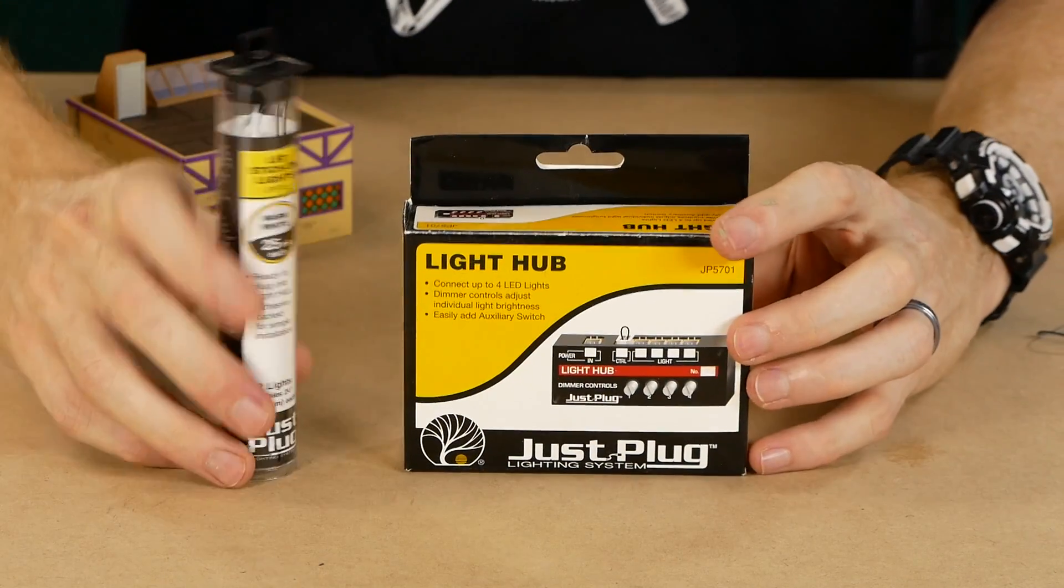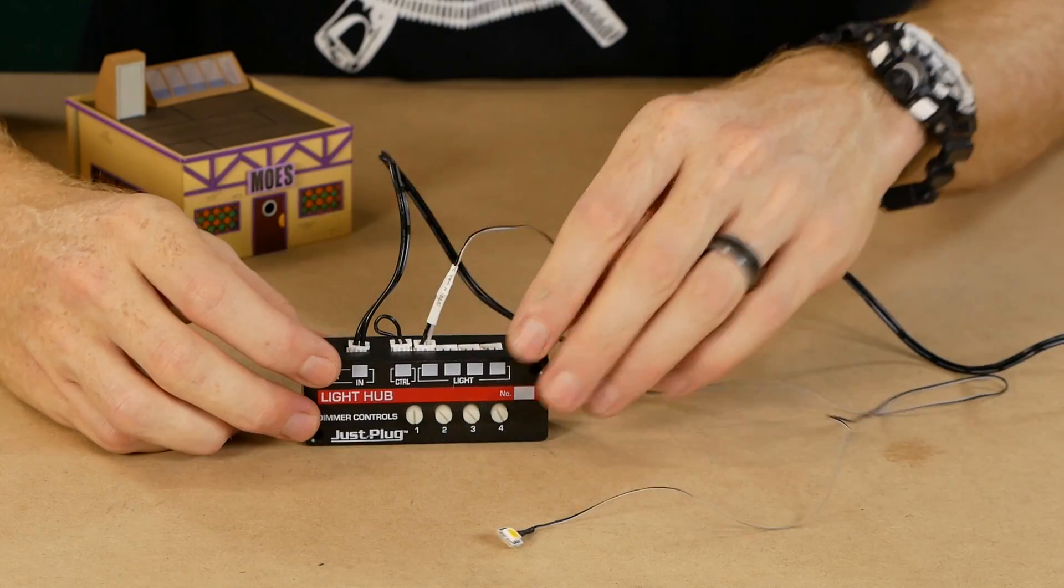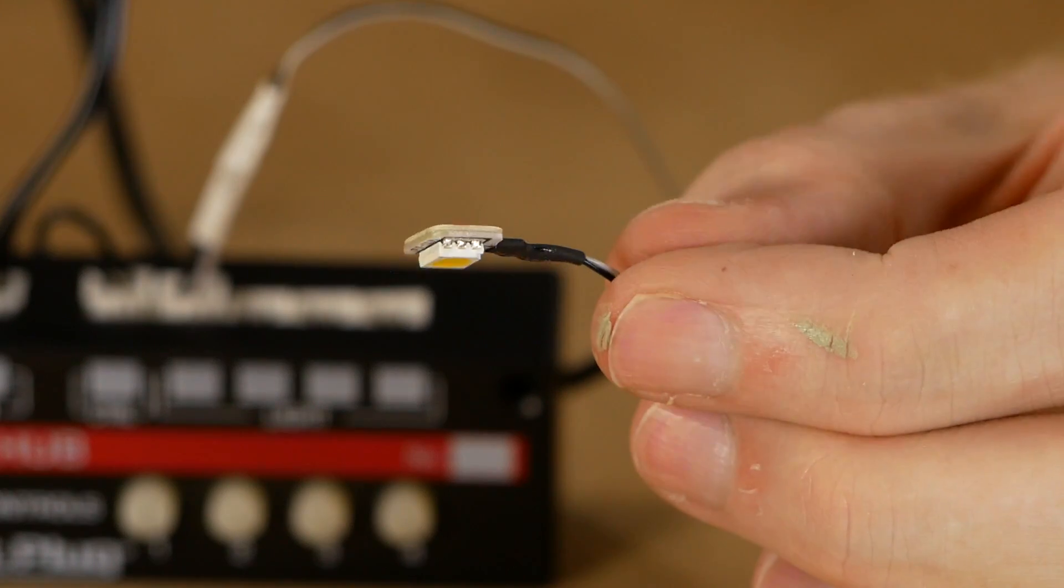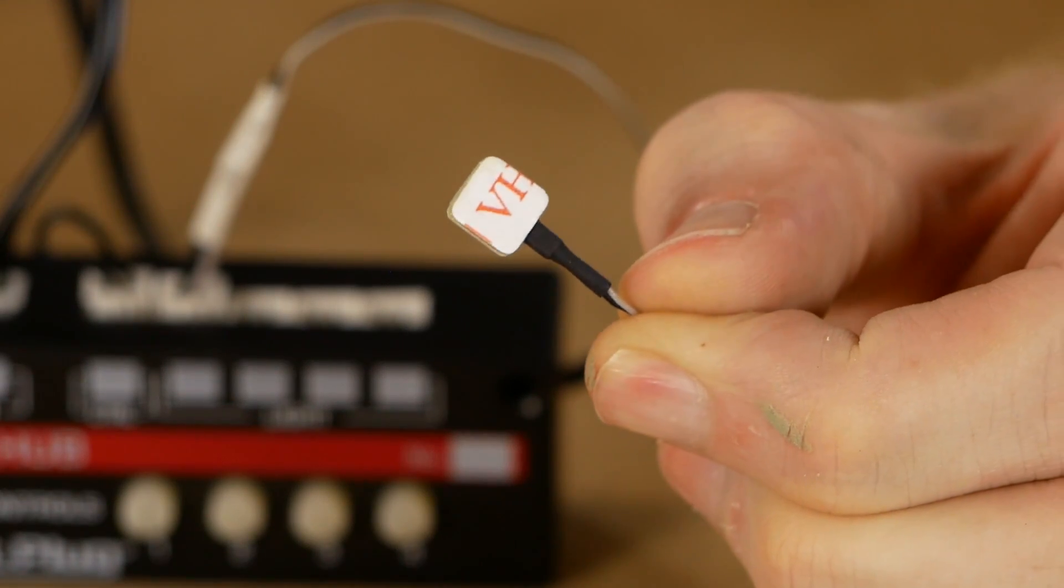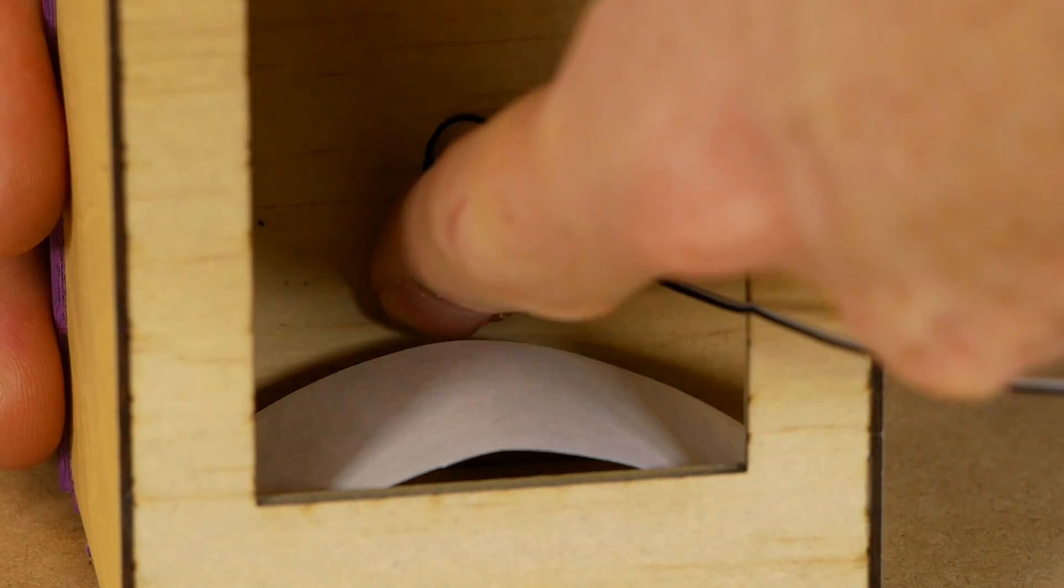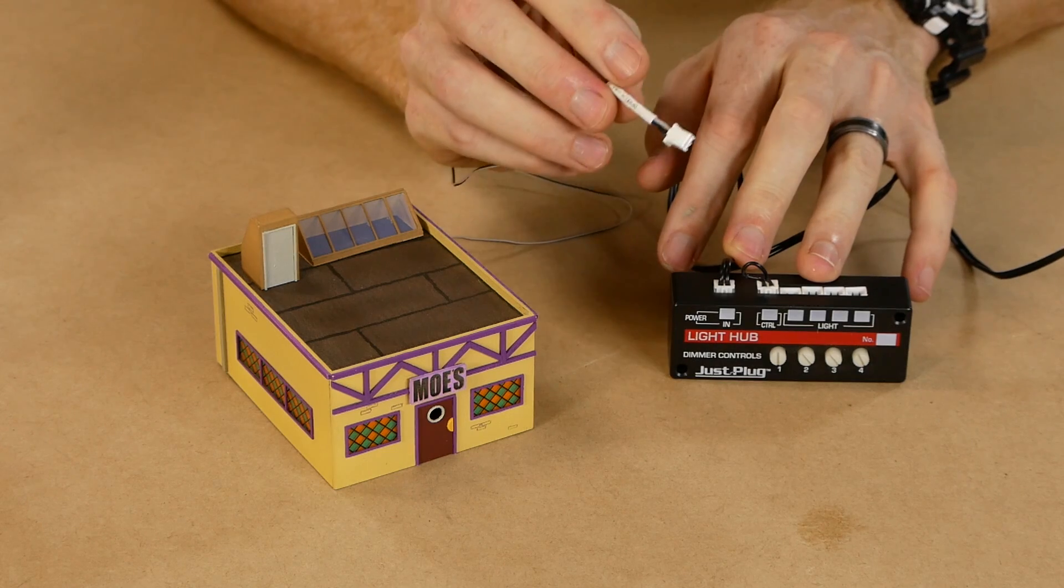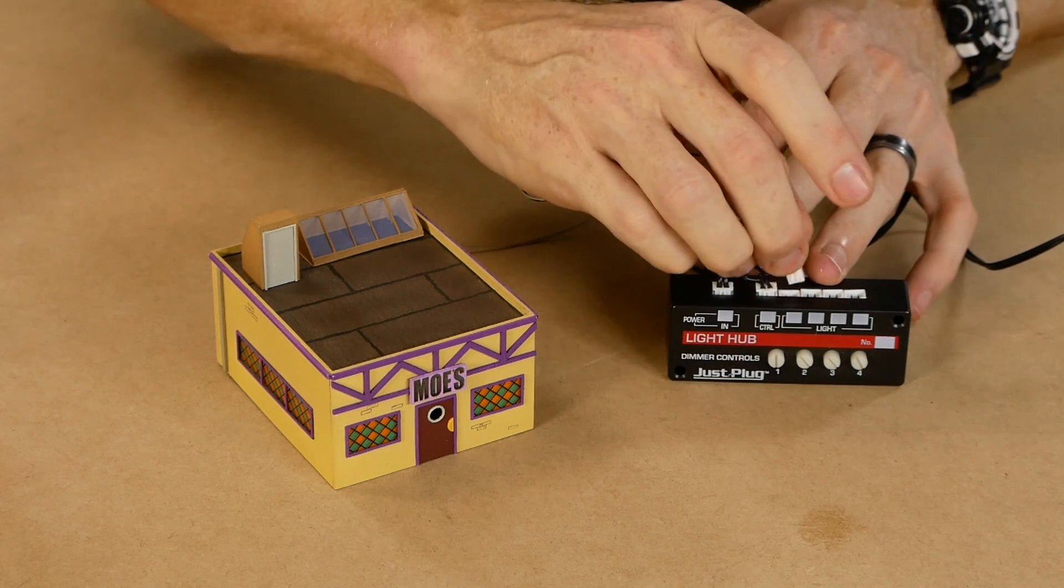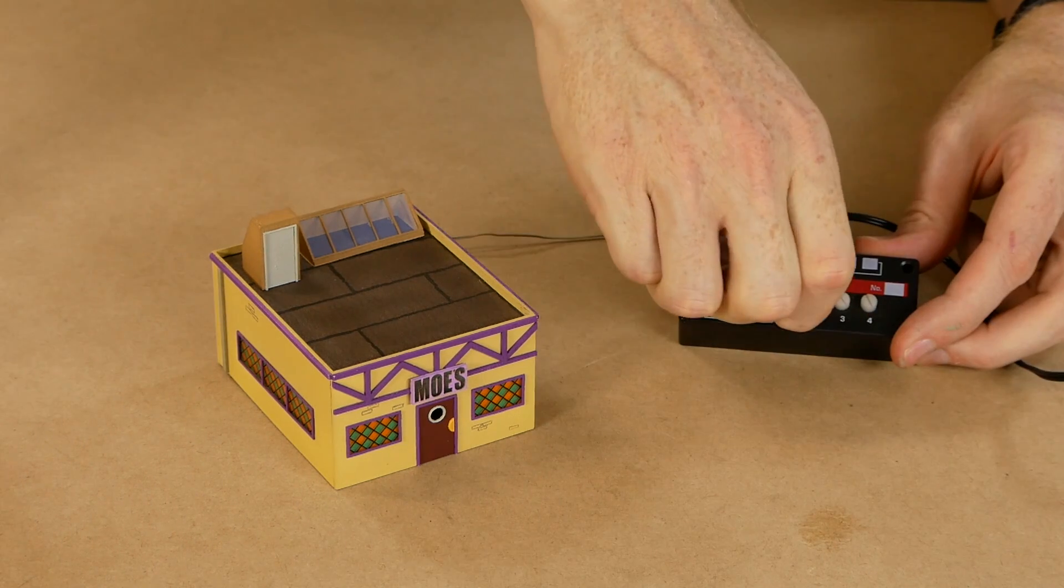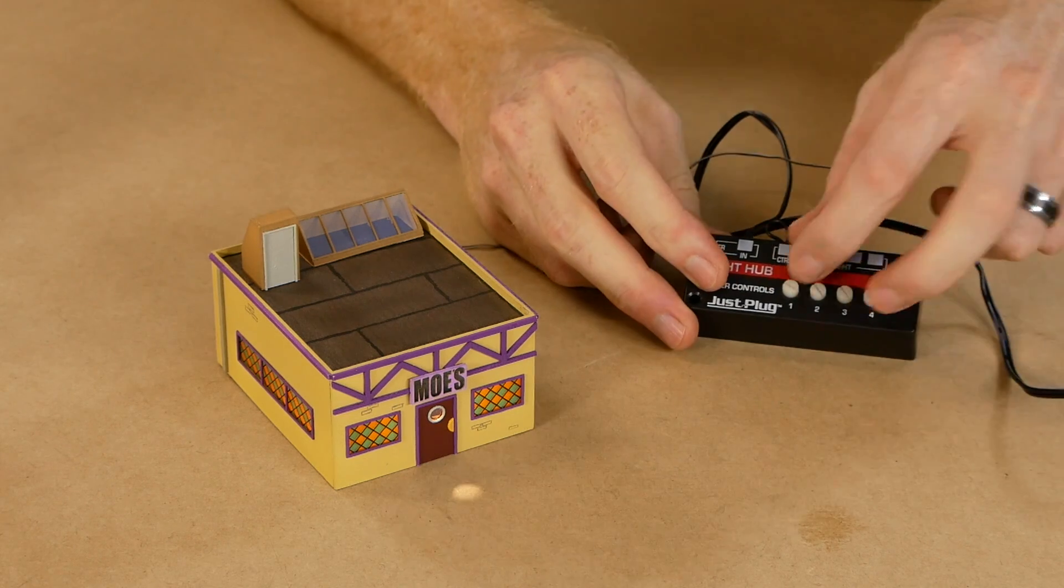The final bit of detail is lighting. For this I went the easy option and use the Woodland Scenics just plug lighting system. I used a large warm white stick on LED for this job. It's very easy to apply the LED in the desired spot and then plug the LED into the light hub. The light hub is then connected to the power pack which plugs into the wall and that's it. The best thing about the light hub is the LEDs can be easily dimmed or brightened to suit your needs.